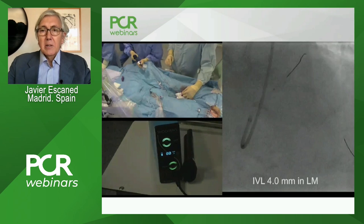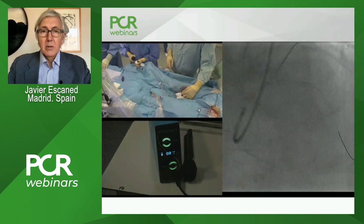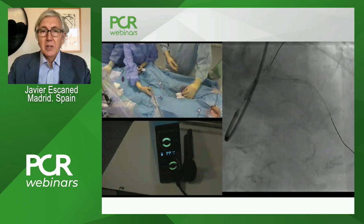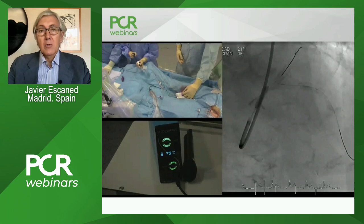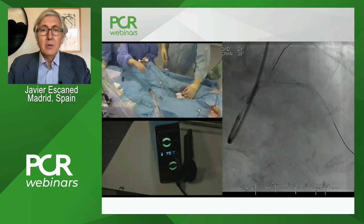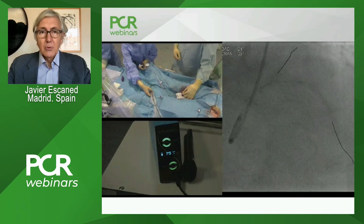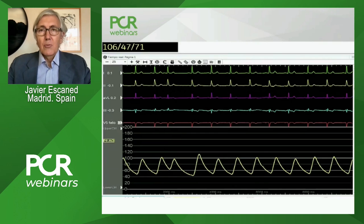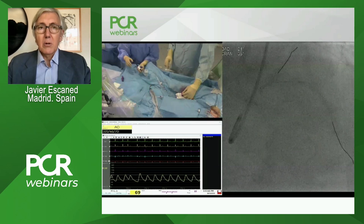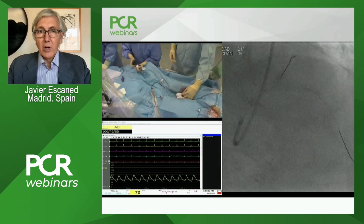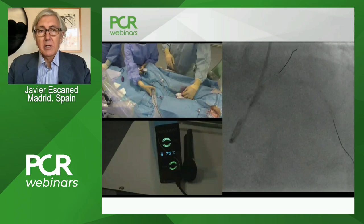We are now in place with a 4 mm IVL balloon. Nieves is inflating up to 4 atmospheres. Of course, this is the left main — you have to be careful regarding the possibility of causing deep ischemia or hemodynamic instability. For that reason, we have restricted the number of IVL hits to five initially. Typically, the system is prepared to deliver 10 hits in a round, but in this particular case we prefer to pay attention to hemodynamics and the ECG to make sure we are not generating profound ischemia and that the patient is tolerating this very well. When we are happy about that, we complete the second round with the remaining five IVL hits.